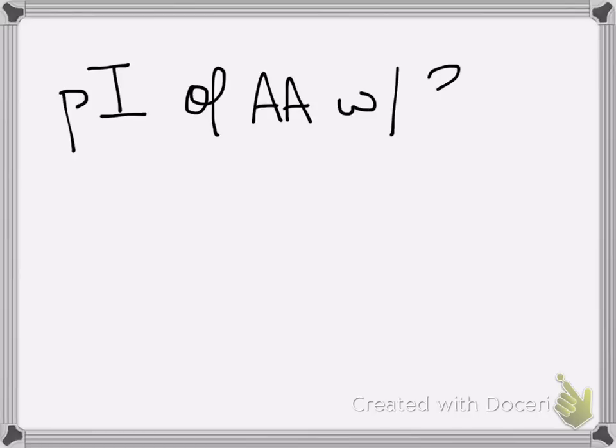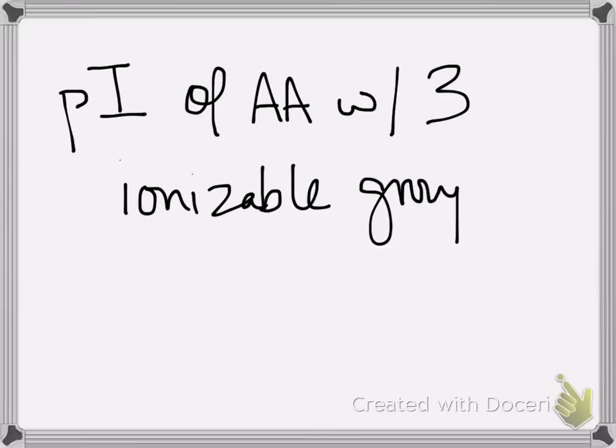I got a request to do a calculation for how you'd figure out what the pI is of an amino acid with three ionizable groups. Remember, if you just have two groups, you just take the average of the two pKa's, but it's a little bit more involved when you have three ionizable groups.